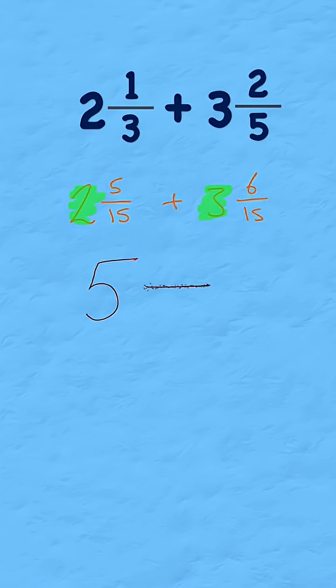And I know my answer is going to be something-fifteenths. Now all I need to do is work out how many-fifteenths I had. Well, I had 5, and I've added it to 6, which means I have 11. So my final answer: 5 and 11-fifteenths. Easy!